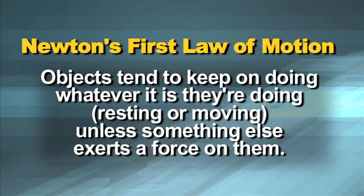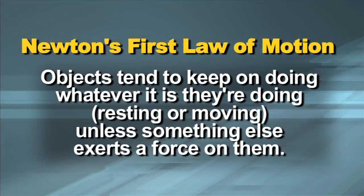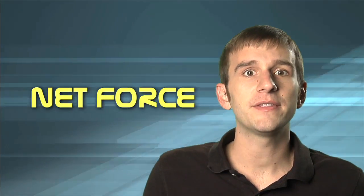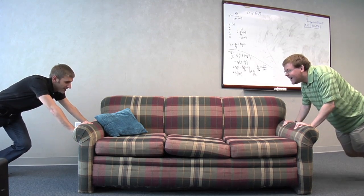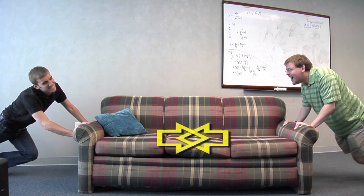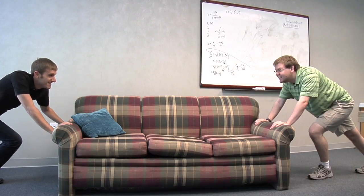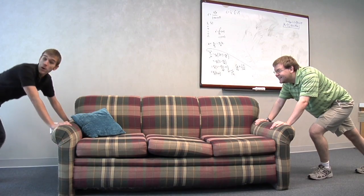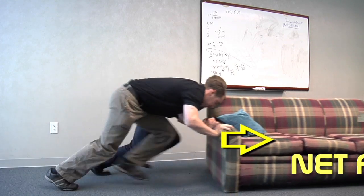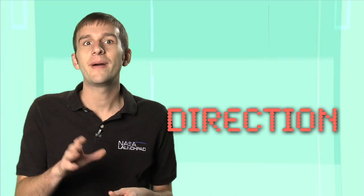Objects tend to keep on doing whatever they're doing — staying at rest or staying in motion — unless something else exerts a force on them. Of course, that's net force. Think of it this way: if two guys are trying to move a couch and one pushes in one direction and one pushes in the other, the two forces are balanced and cancel each other out. The couch doesn't move. But if a third guy joins one side, you have a net force. Direction is important too.